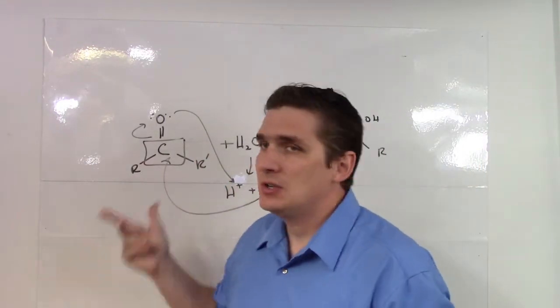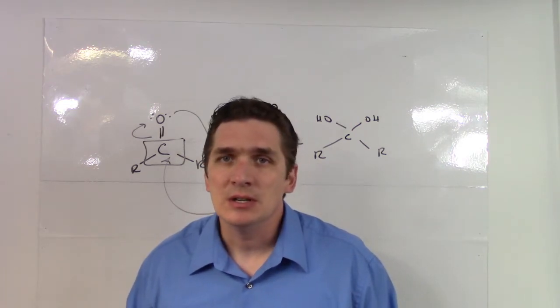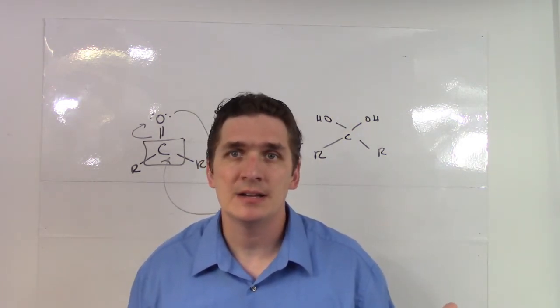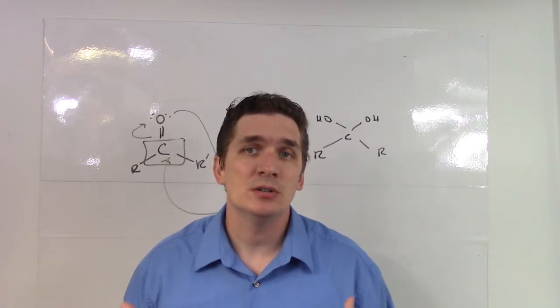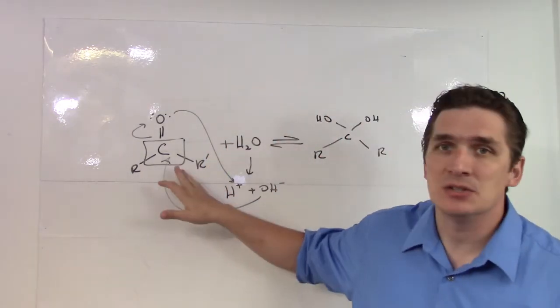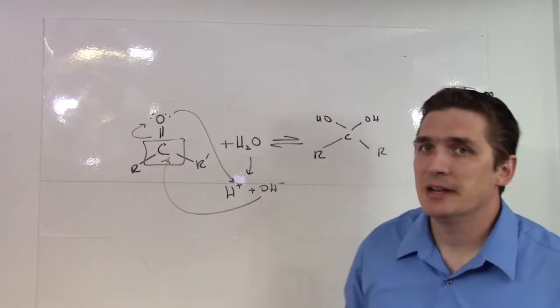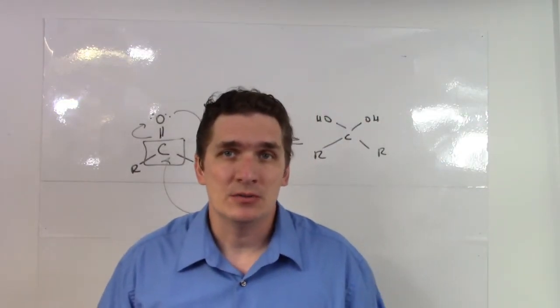If these are very electron donating groups, so you have something like a phenyl ring, or you have a lot of alkanes, alkyl groups here, they are going to drive us towards the reverse direction. These are less likely to form the geminal diols in the event that we have an alkyl group.